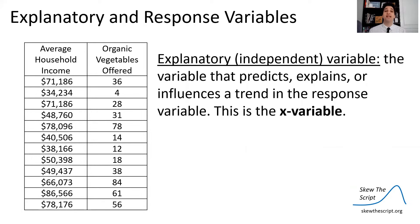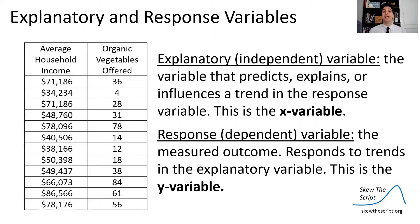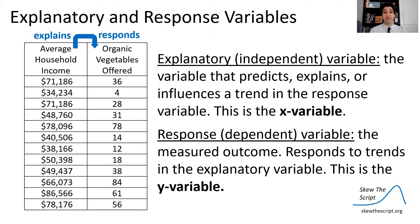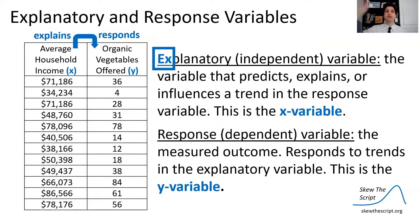Usually when you have bivariate data — two variables — there's one explanatory and one response variable. The explanatory variable is the one that predicts, explains, or influences a trend in the measured response. The response variable, sometimes called the dependent variable, is the measured outcome that is explained, predicted, or influenced by the explanatory variable. When we visualize this, the explanatory variable — in this case the average household income in the zip code — is X, and the response — the amount of organic food items — is Y.